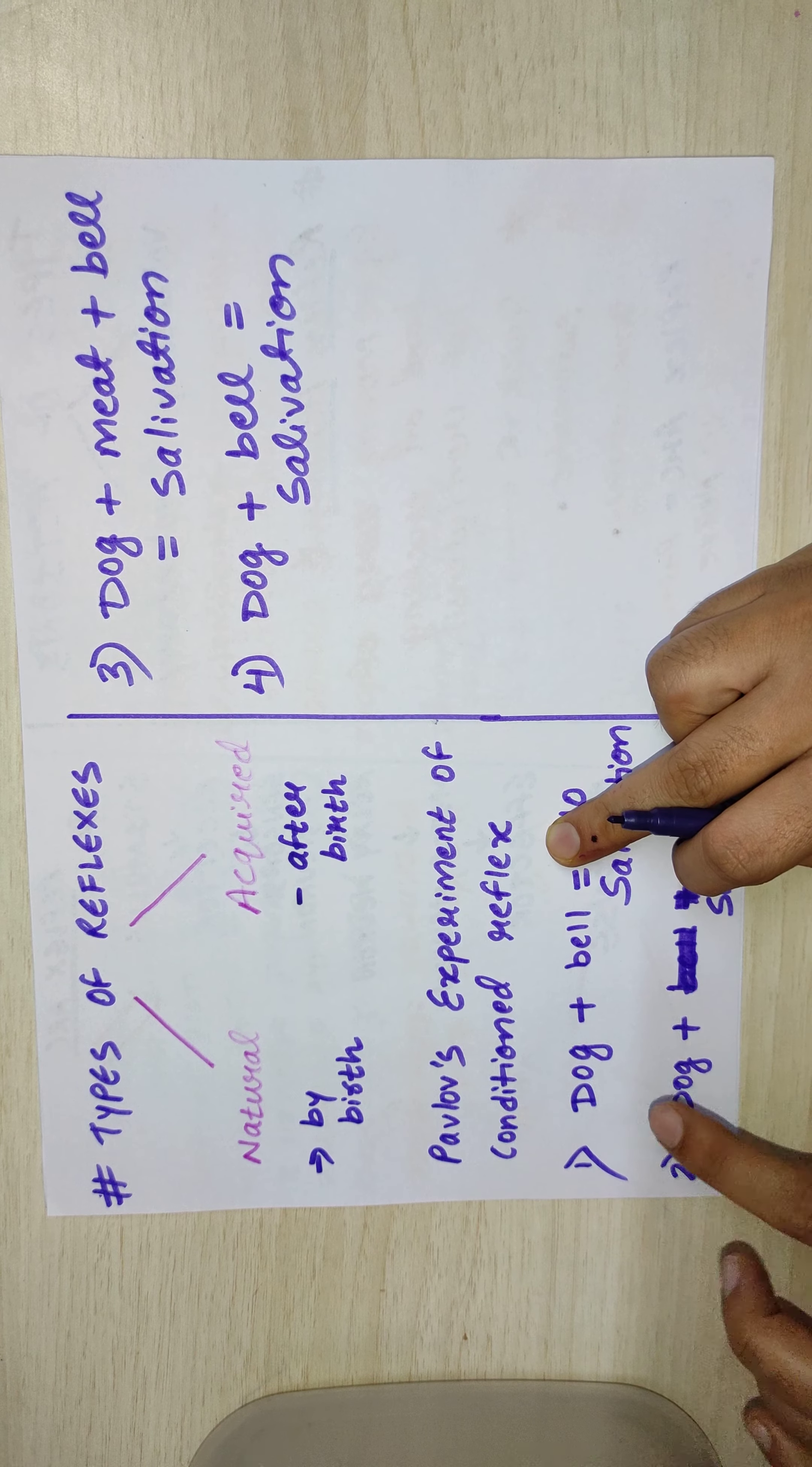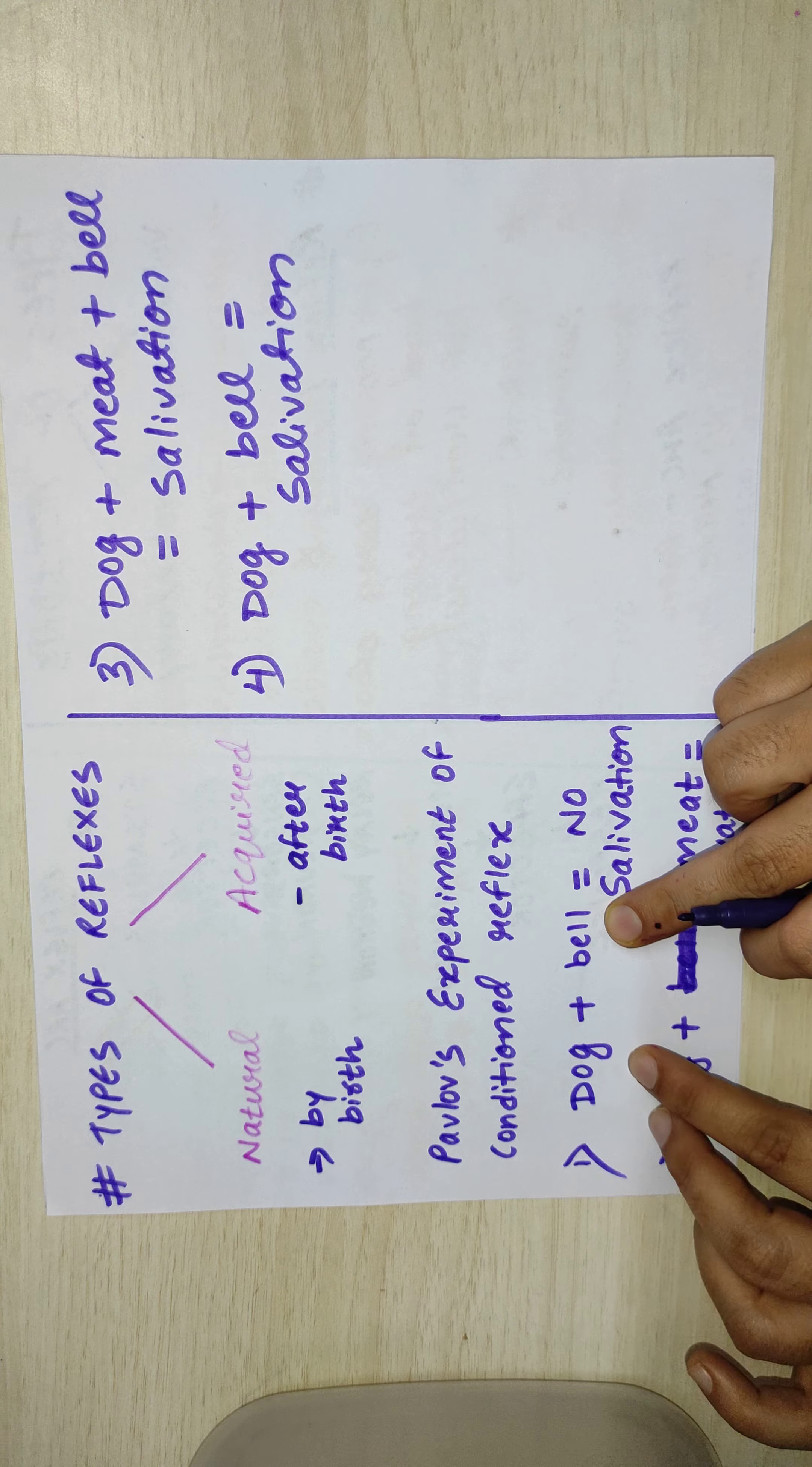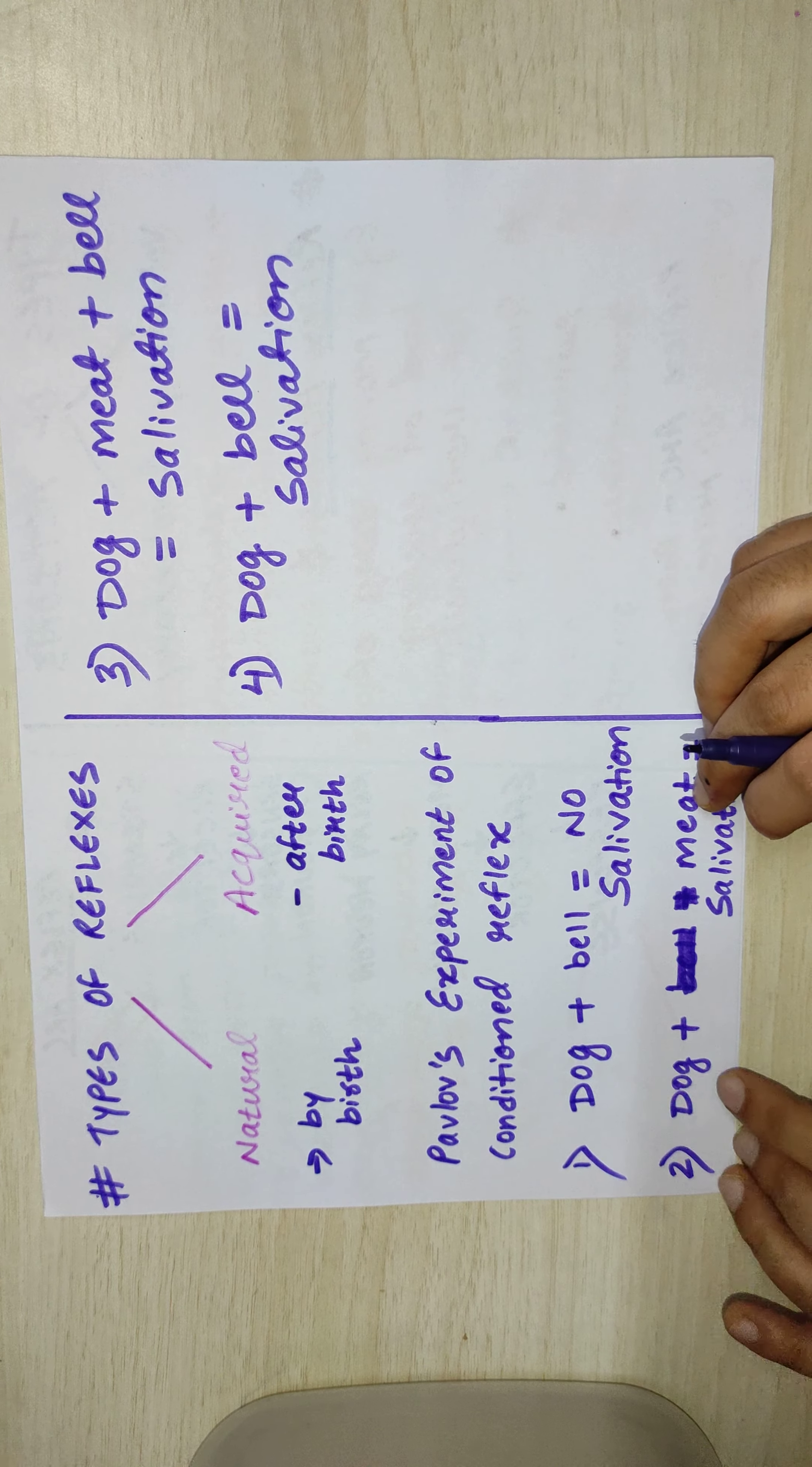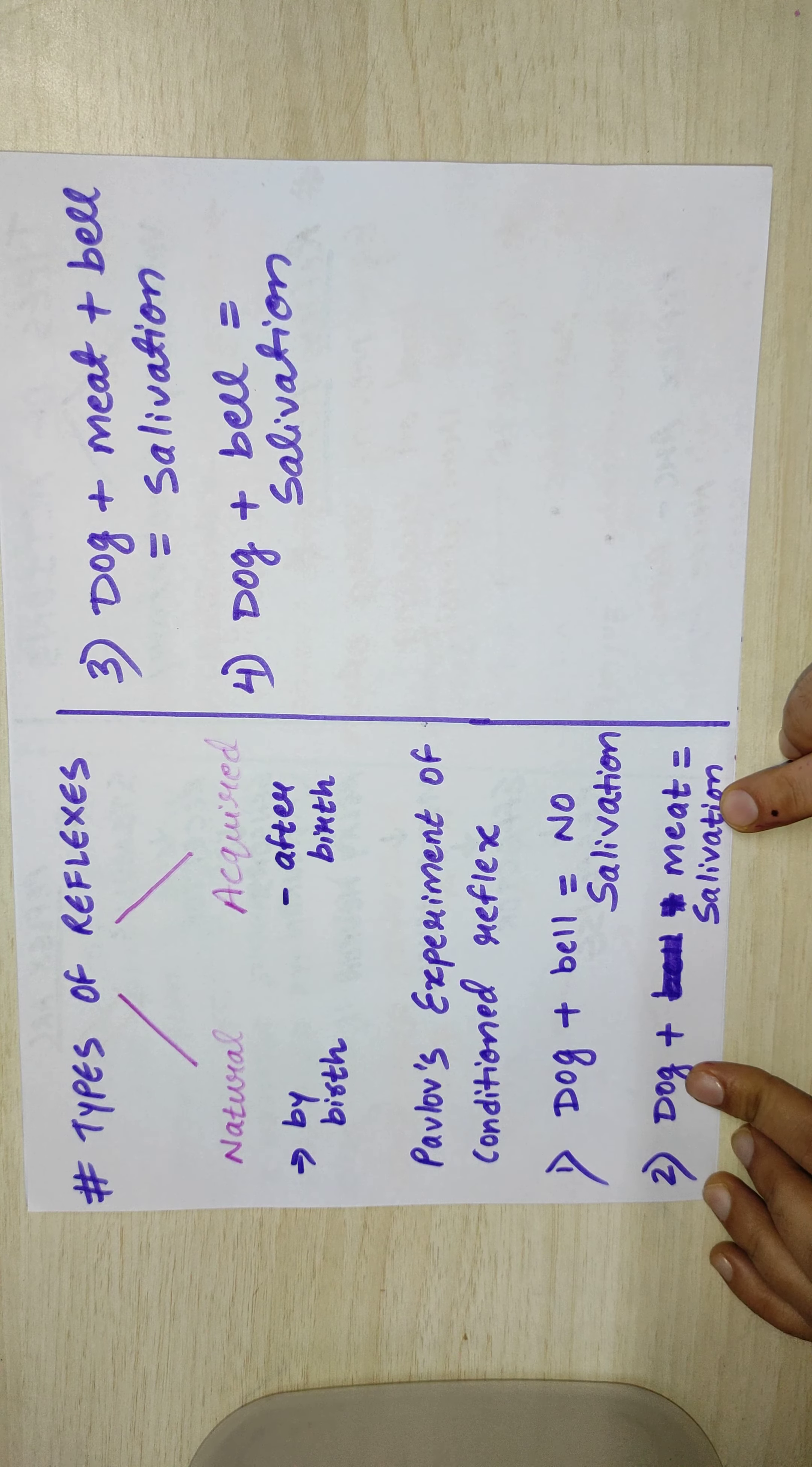He brought or rung a bell near a dog. The dog did not salivate - he did not salivate means there was no saliva in his mouth. But when the meat was brought near the dog, the dog started to salivate.